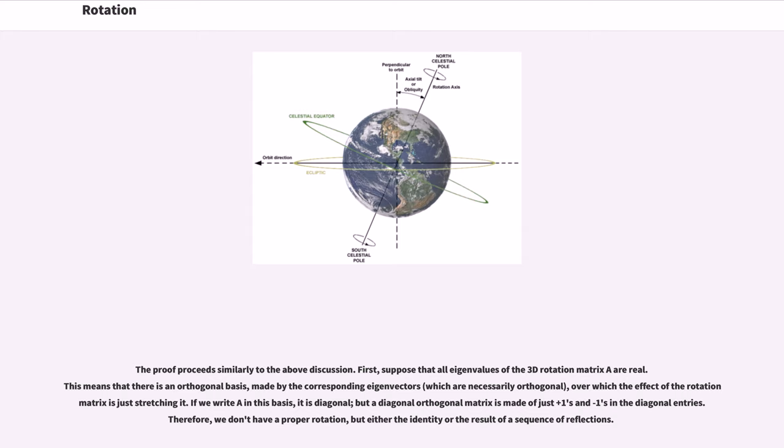First, suppose that all eigenvalues of the 3D rotation matrix A are real. This means that there is an orthogonal basis, made by the corresponding eigenvectors, over which the effect of the rotation matrix is just stretching it. If we write A in this basis, it is diagonal, but a diagonal orthogonal matrix is made of just plus 1s and minus 1s in the diagonal entries. Therefore, we don't have a proper rotation, but either the identity or the result of a sequence of reflections.